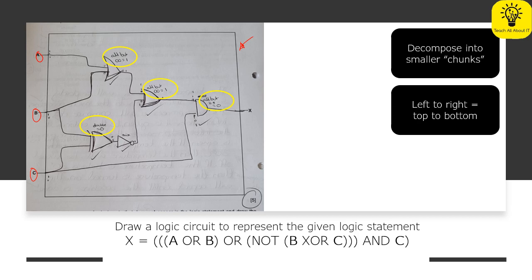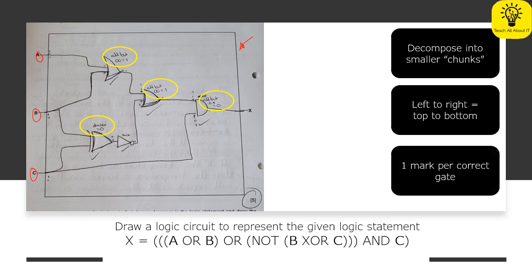Now one of the things that you want to do when you see this kind of logic statement, especially when you have something quite large, is to do this left to right in terms of the logic statement is going to be top to bottom when you're actually drawing the diagram. So what you're going to get here is one mark per correct logic gate. So this was a five mark answer, five correct logic gates and you're absolutely there.